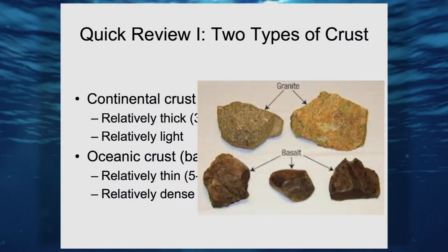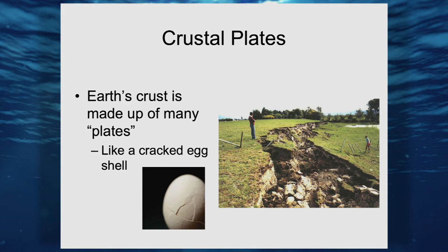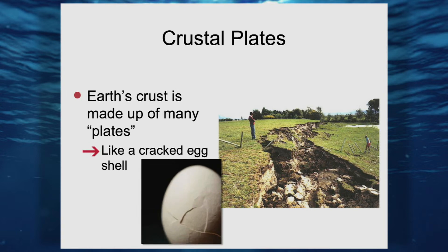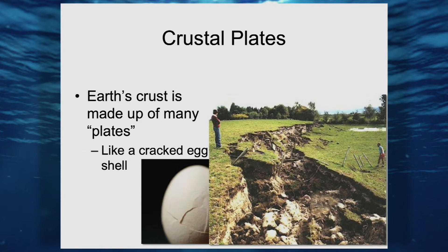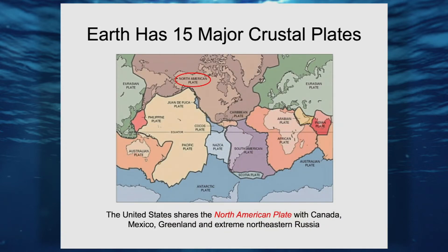So we've got granite and basalt — two types of crust. Earth's crust is solid; however, it's cracked. The analogy I use is the cracked eggshell — a pretty good analogy. A crustal plate would be all of the area inside of a crack, inside of a cracked eggshell — for us, inside the cracks of the Earth's crust. There are a bunch of these crustal plates, various sizes, some really quite large. I think the one we are on, the North American plate, is the largest crustal plate.